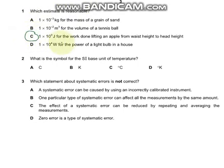Question 2 asks what is the symbol for the SI base unit of temperature. For temperature it is Kelvin, so B is the appropriate answer. Question 3 says which statement about systematic error is not correct.